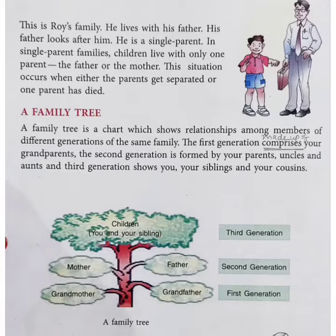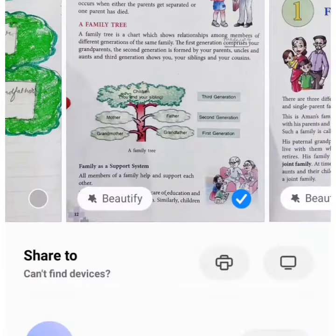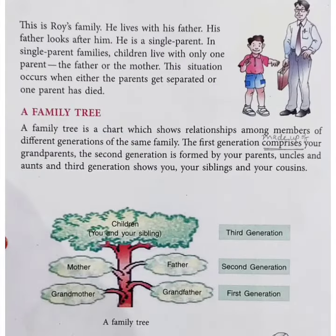If you have a nuclear family then you will make a little tree, because nuclear family is a small family. And if you have a joint family then you have to make a big tree. If you have a joint family then the tree will be big.